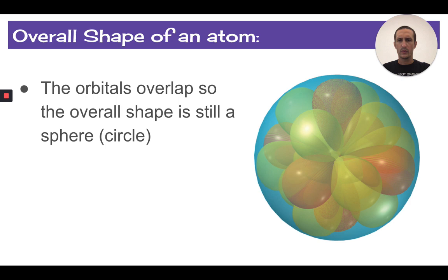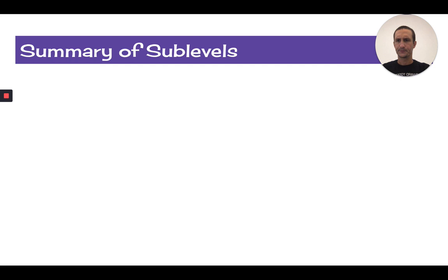The other thing I wanted to mention is that orbitals overlap. And what that means is that the overall shape of an atom is generally spherical or circular.